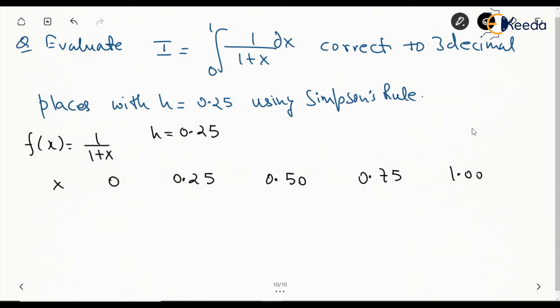As per x, we will have f(x). So 0 will give 1/(1+0) which is simply 1. Then 1/(1+0.25) will give 0.8, this will give 0.6667, then 0.5714, and for 1 it will be simply 0.500.